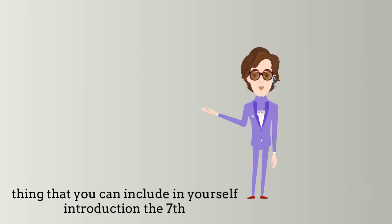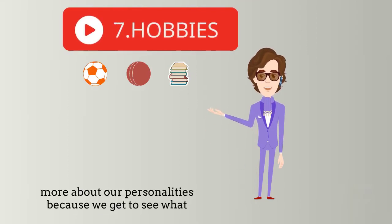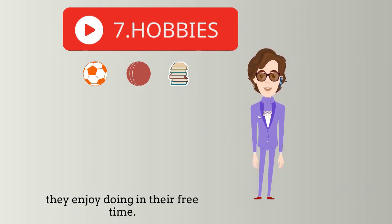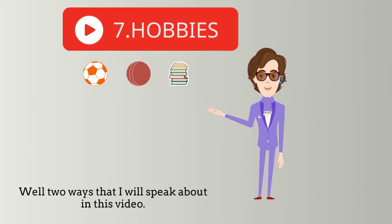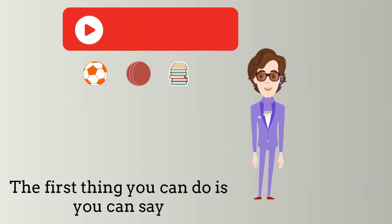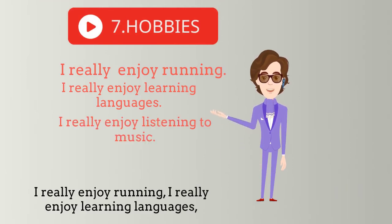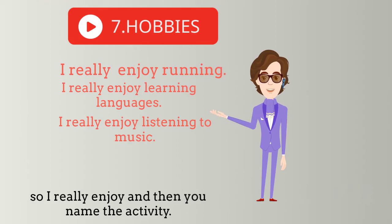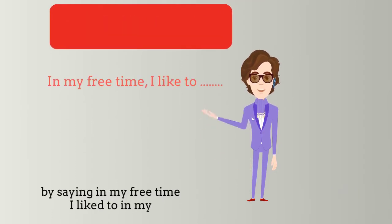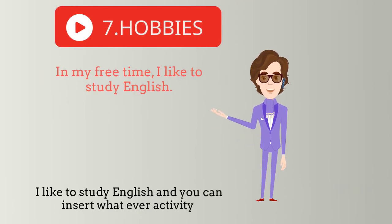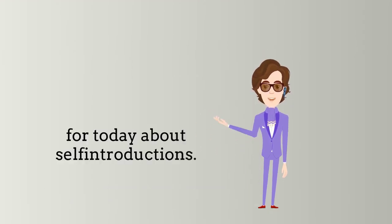The seventh and last thing you can include in your self-introduction is your hobbies. When we talk about our hobbies, we allow people to know a little bit more about our personalities, because they get to see what we enjoy doing in our free time. The first way is to say 'I really enjoy running', 'I really enjoy learning languages', or 'I really enjoy listening to music'. The next way is to say 'In my free time, I like to run' or 'In my free time, I like to study English' — just insert whatever activity you enjoy.